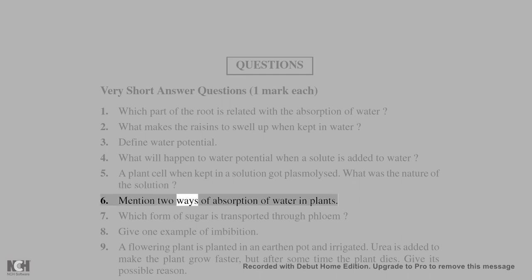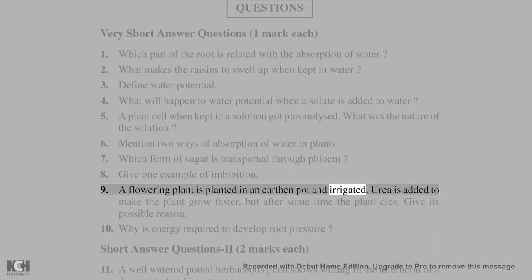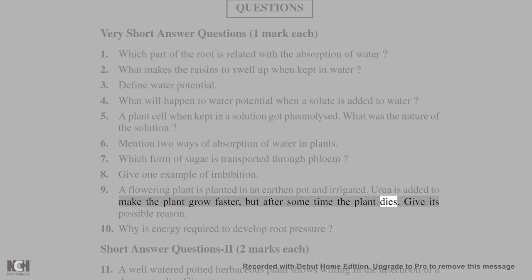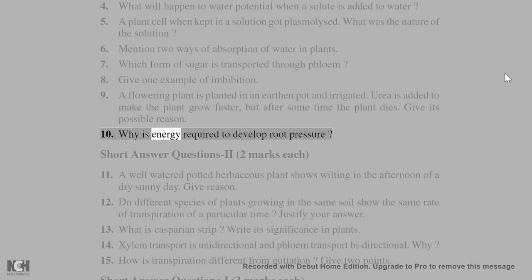6. Mention two ways of absorption of water in plants. 7. Which form of sugar is transported through phloem? 8. Give one example of imbibition. 9. A flowering plant is planted in an earthen pot and irrigated. Urea is added to make the plant grow faster, but after some time the plant dies. Give its possible reason. 10. Why is energy required to develop root pressure?